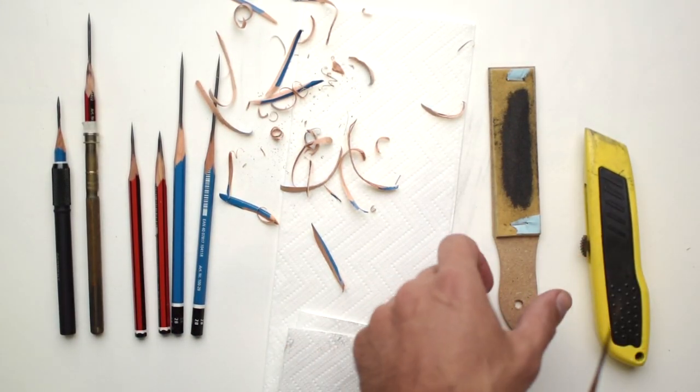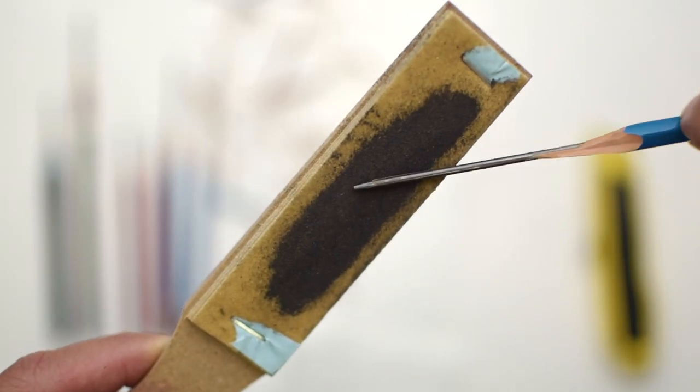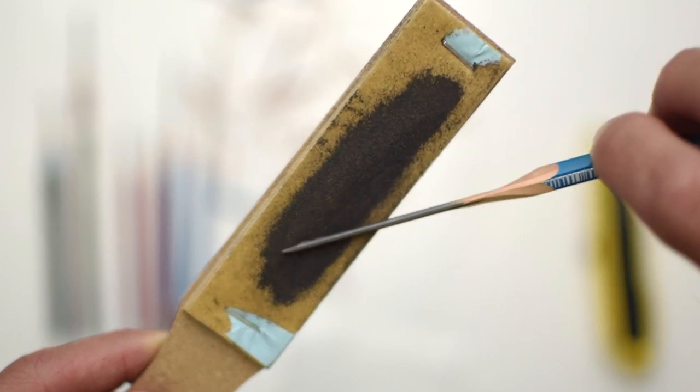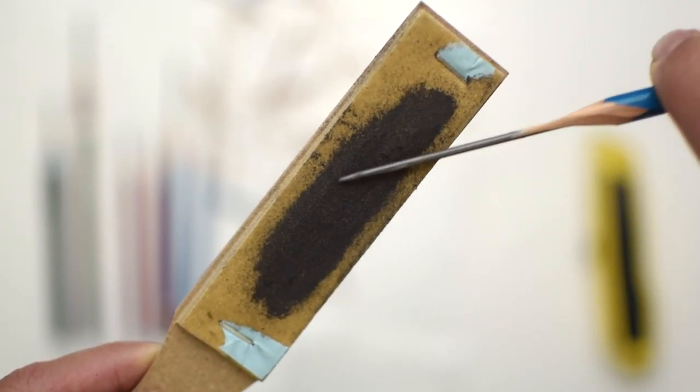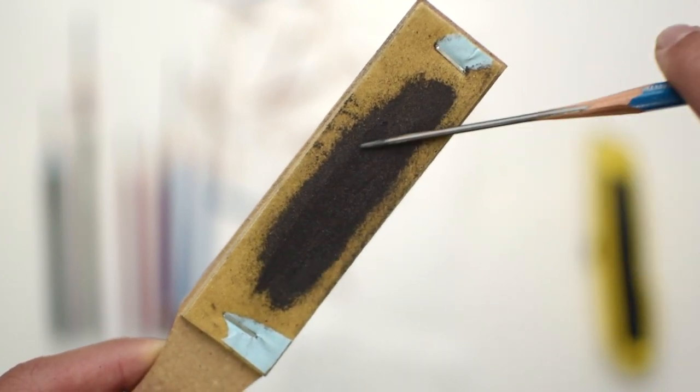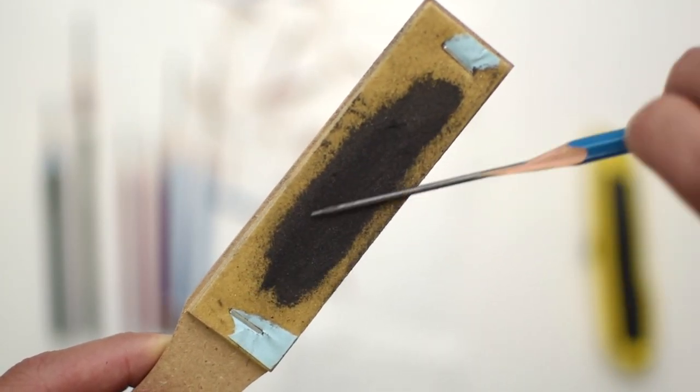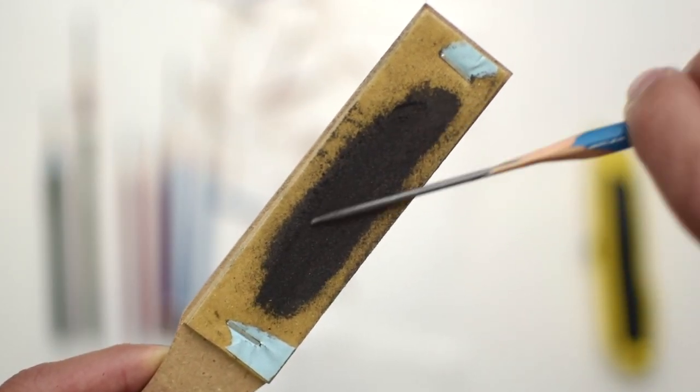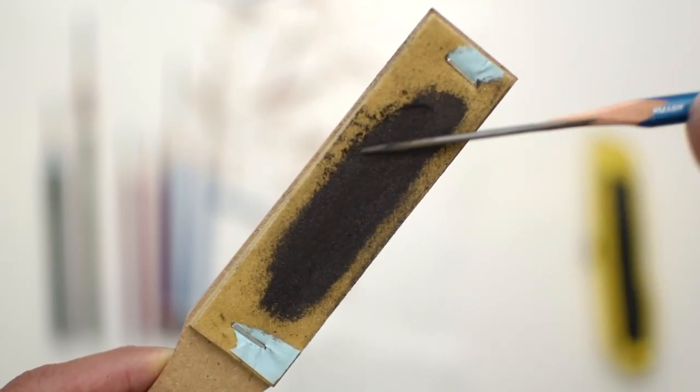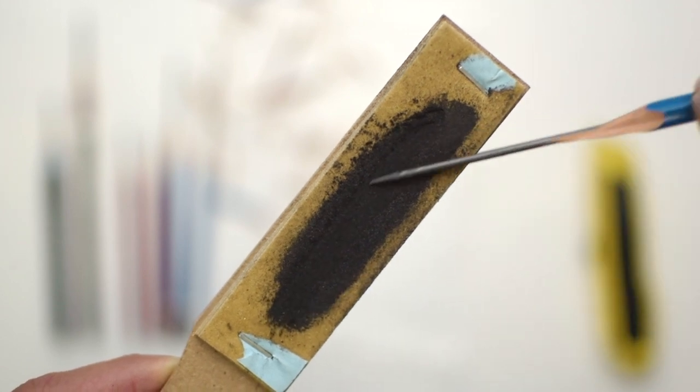And when you're done with that, get your sand pad and begin sanding it because we want it a little bit sharper than what's left from just using the knife alone. In order to do this, again, you'll be very careful not to push down too hard on the sand block so it's not breaking the lead.